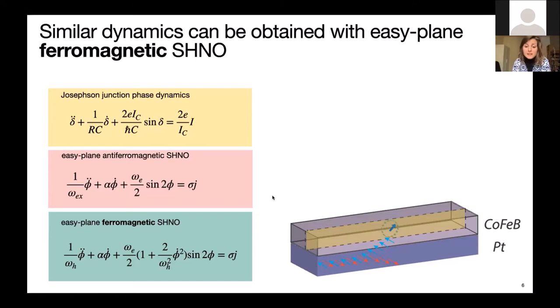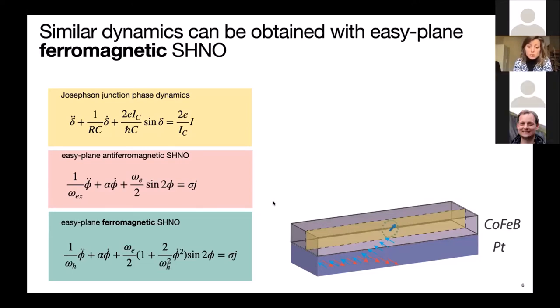However, they have a quite different geometry from the usual spintronic oscillators, in the sense that they have this easy plane that has to be perpendicular to the polarization of the spin current, which, if we are using spin hole effect to polarize current, means that it needs to be perpendicular to the film stack. And also, this gives a hard axis to this material, which plays the role of the exchange coupling.